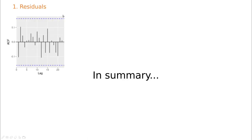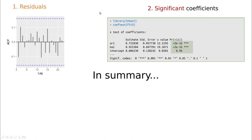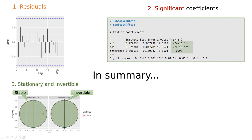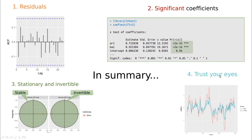In summary, we've seen four ideas. First, check the residuals — not only the autocorrelation function but also the partial autocorrelation function — because we can learn iteratively how to improve model identification. Second, check if the coefficients are significant, ensuring the model has meaningful estimators. Third, check for stability, stationarity, and invertibility. And fourth — probably the most important — trust your eyes, because whenever you see a poor fit, you can tell the model is not capturing what's really happening in the time series.